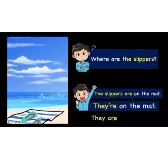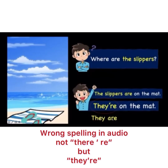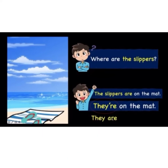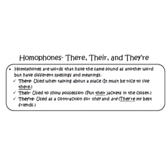The short form for 'they are' — T-H-E-Y-apostrophe-R-E — we pronounce it as 'they're'. They're on the mat. Alright. I'm going to give you an example. 'They are' refers to the slippers. The short form for 'they are' is 'they're'. Today, you are going to learn a new thing — you should learn this in Year Three, but it's okay, we just learn it now. These three words are called homophones.